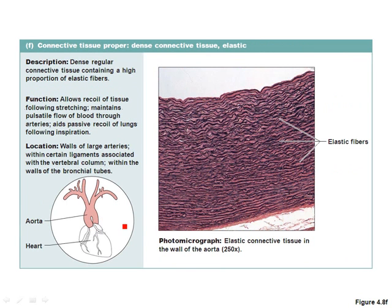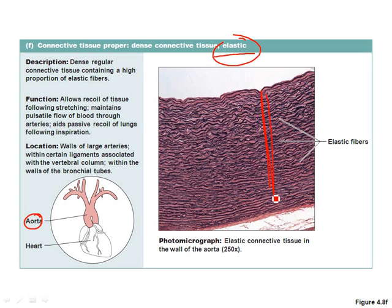Then you have dense elastic connective tissue, which has a very good ability to stretch out and snap back to its original shape. A common place to find this is inside the aorta — the large artery coming off the heart. Every time the heart beats, it forces a large amount of blood into the aorta and then it stretches and collapses back, like your pulse. You also see elastic connective tissue inside the bronchial tubes, which expand and contract with every breath.